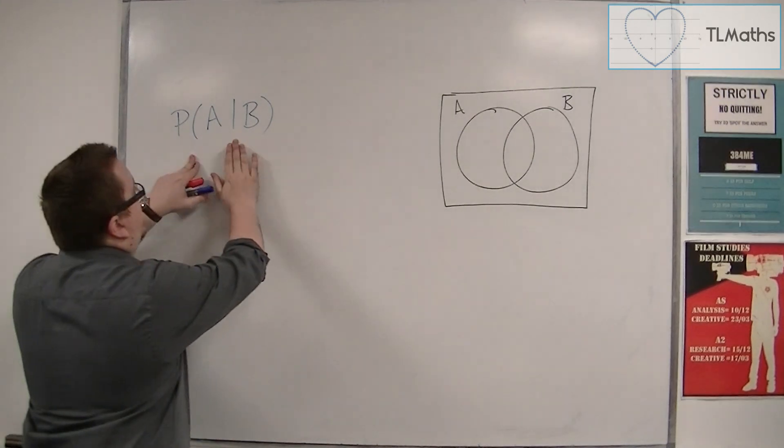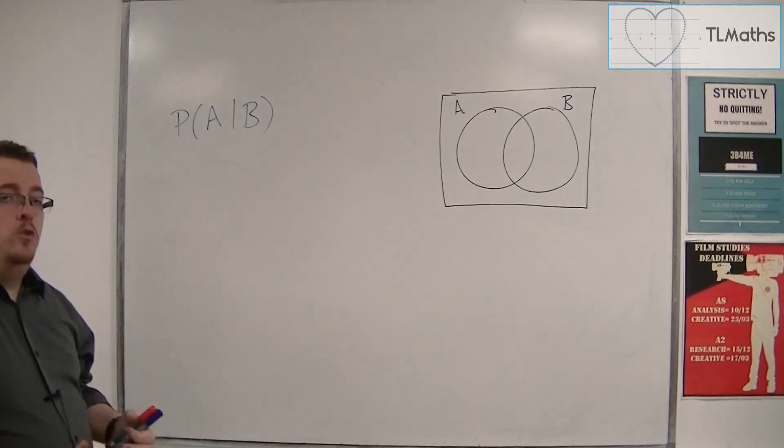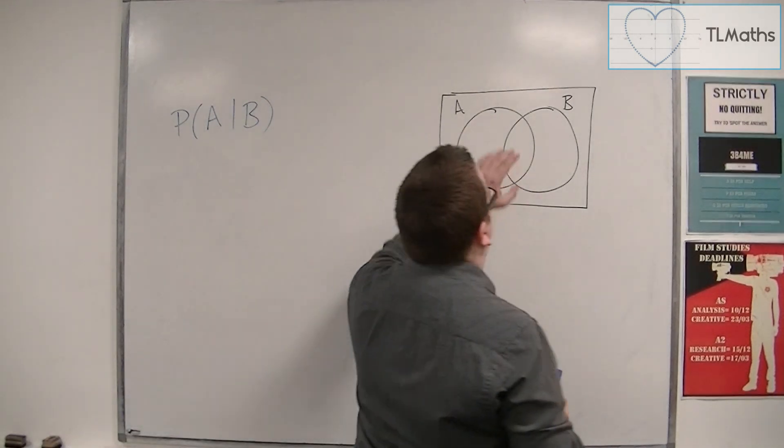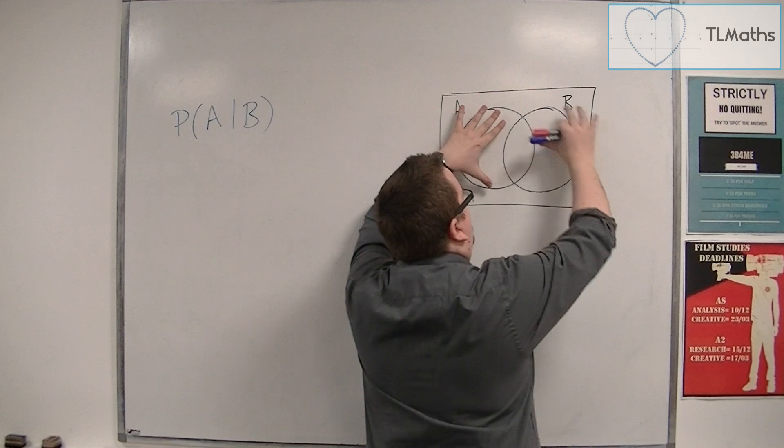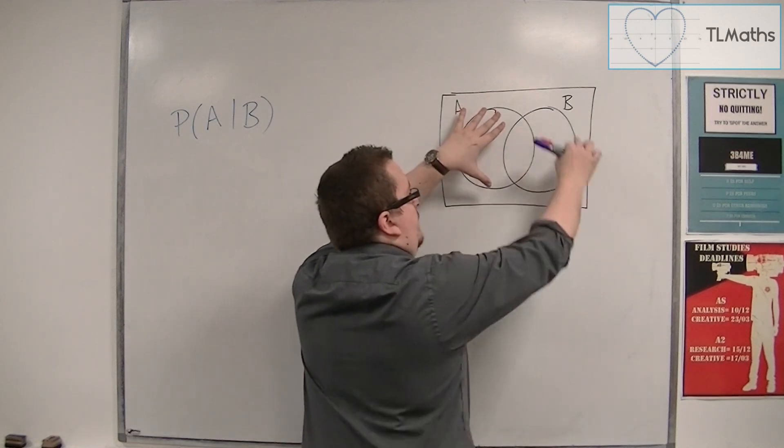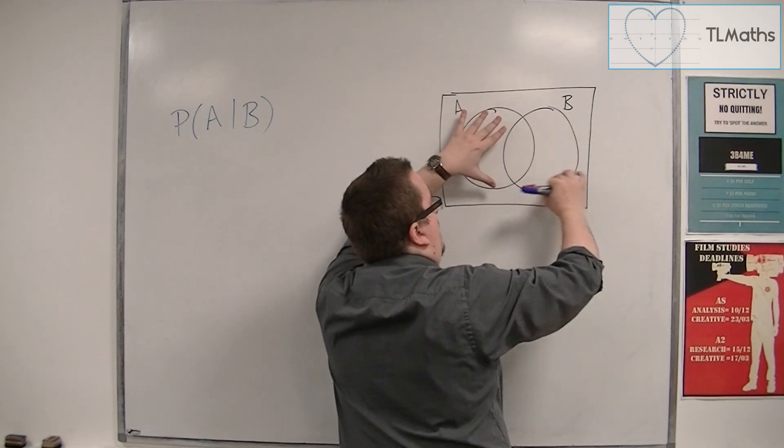So, if I'm working this out, what it means is that if I know that B has already happened, I am just looking at B, effectively. OK? So, the probability of B.